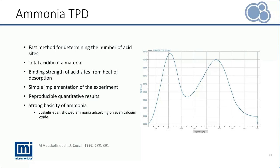For example, Jeskellis et al. showed ammonia even adsorbing on calcium oxide, probably adsorbing onto the weak Lewis acidic calcium sites. Also, the small molecular size of ammonia can get access to very small pores of high surface area materials like zeolites, and those pores don't necessarily engage in the catalytic activity of interest. So the acidity measured with ammonia can be an overestimation by including the acidity of those small pores that are inactive in reality.